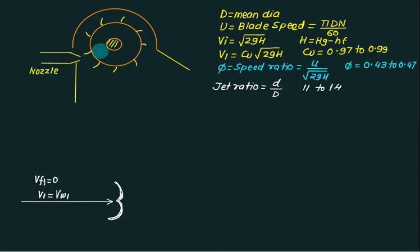As the jet is approaching towards the Pelton turbine with velocity equal to V1, in the mean time the buckets are moving with velocity equals u. We have a relative velocity concept.